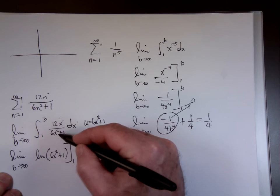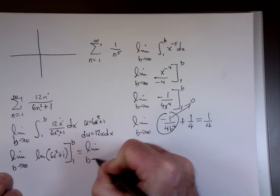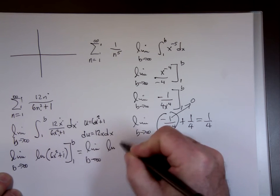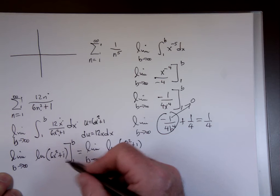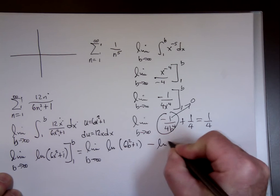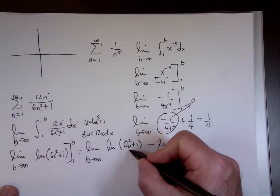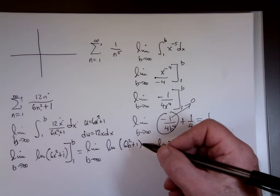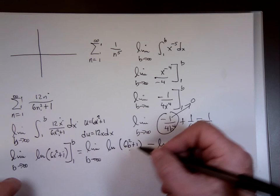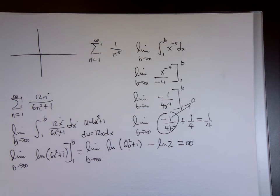The integral of 1 over u du is natural log. You don't need an absolute value here because 6n squared plus 1 is positive. I'm just going to put 6x squared plus 1 from 1 to b. Substitute in b, and then substitute in a 1, you get natural log of 2. We don't care about that. Here's what we care about: as b goes to infinity, 6b squared plus 1 will increase without bound, and its natural log will also increase without bound. Given that, this goes to infinity. The integral diverges. Therefore the series diverges as well, which we knew from the beginning.